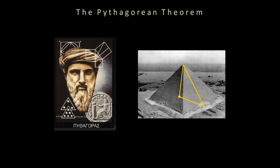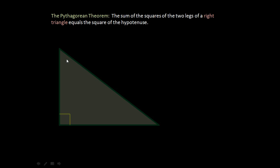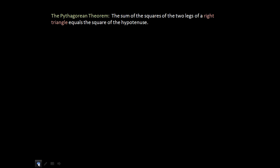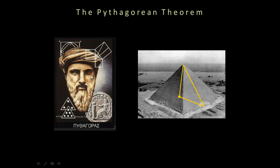This is a quick little video on the Pythagorean theorem. You can see here we have a couple pictures. This first one over here is just a picture of Pythagoras, and here's a little Greek coin with him on it. This is one of his things called a magic triangle — it's kind of a picture of Pythagoras.